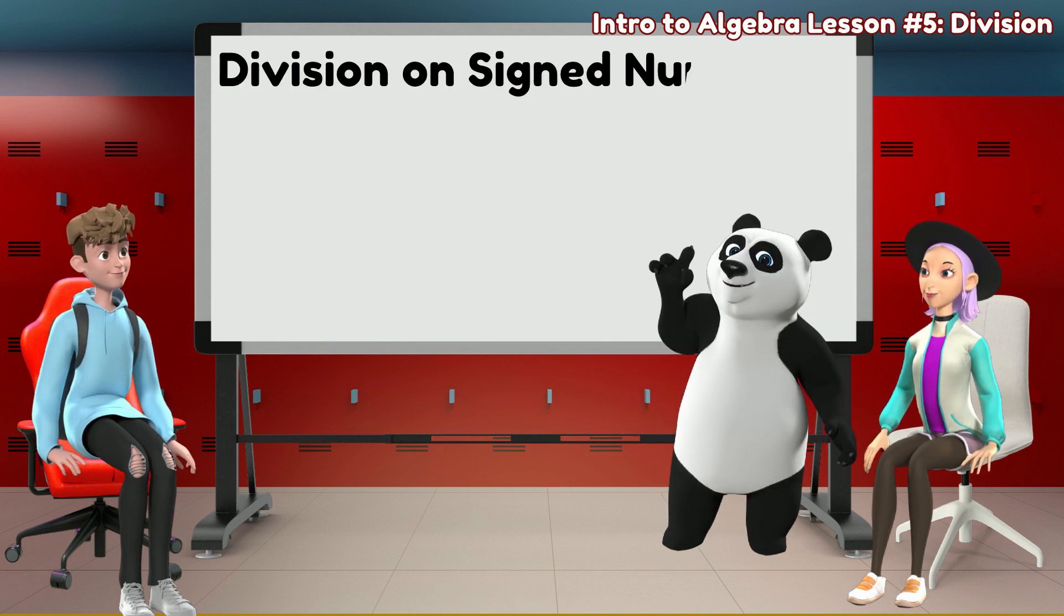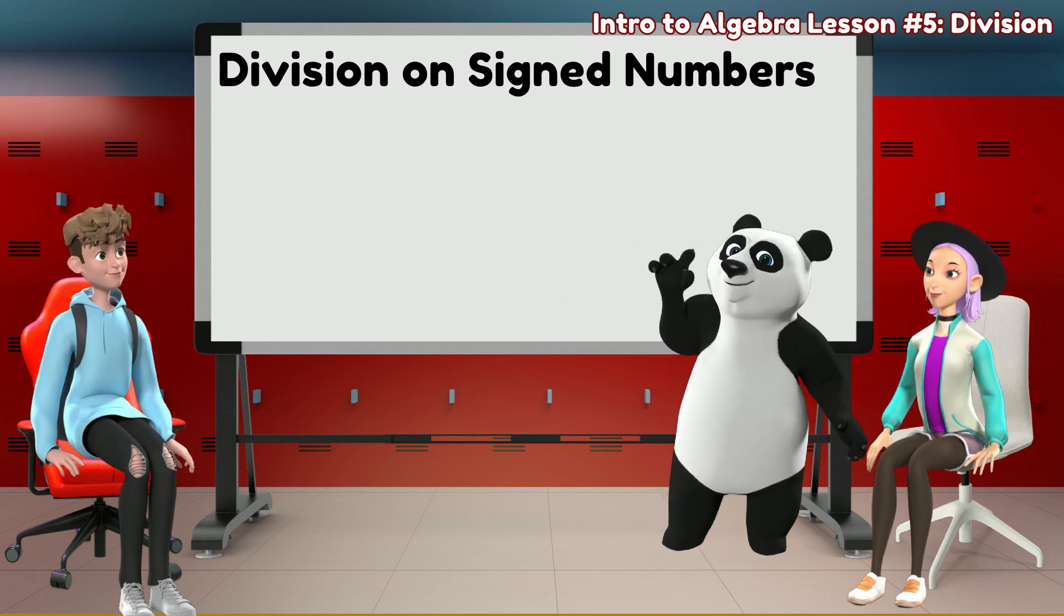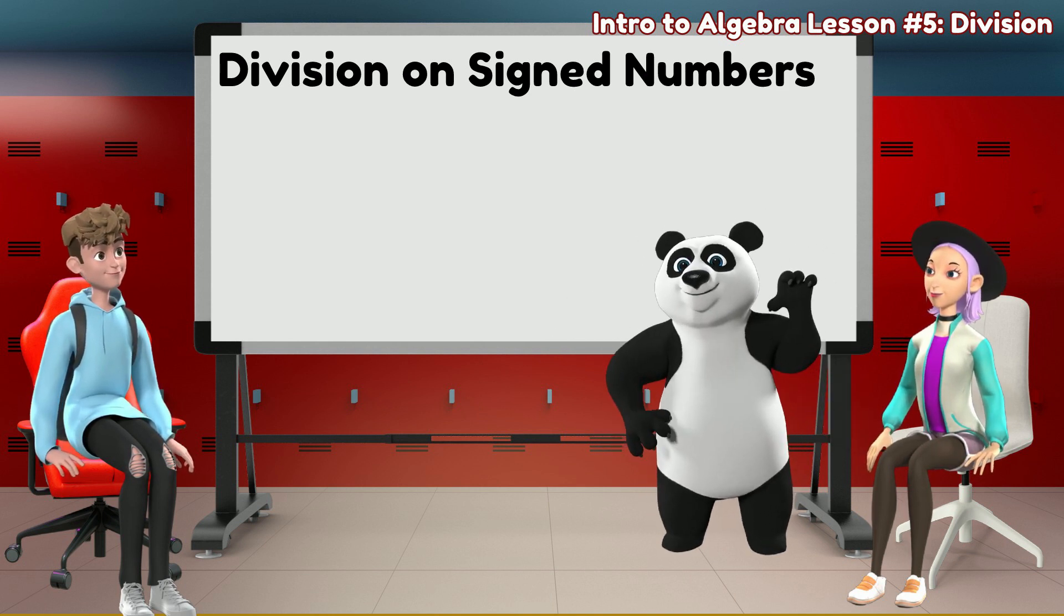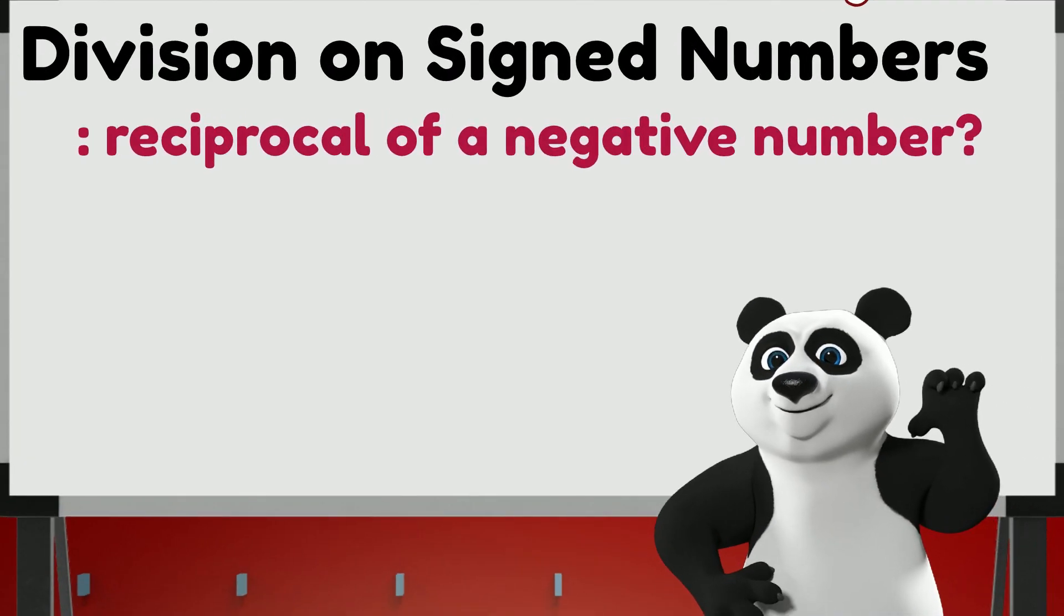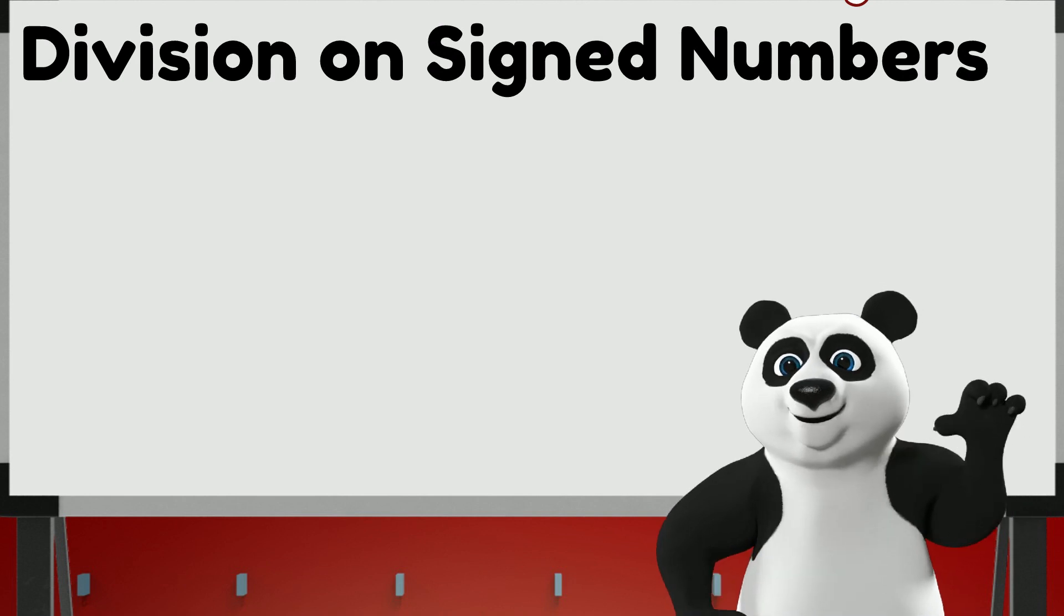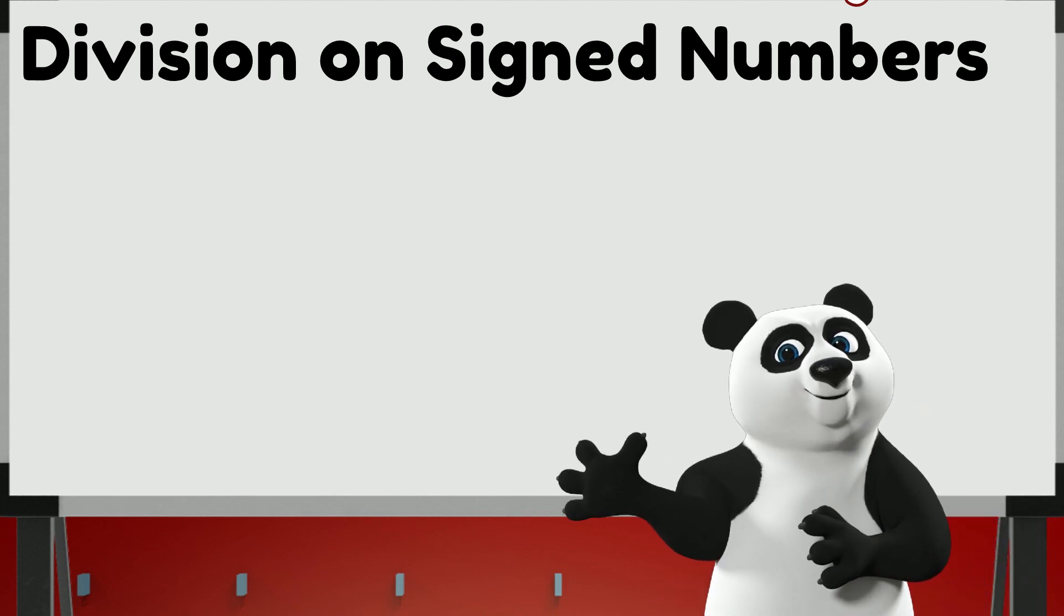The last topic we have for this video are the rules for division on signed numbers. Since dividing by a number is multiplying by its reciprocal, we need to make sure we know the reciprocal of negative numbers as well. We know that any pair of numbers whose product is 1 are reciprocals of each other.